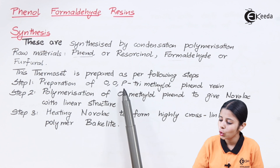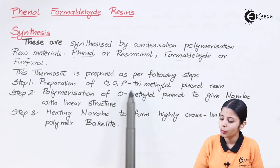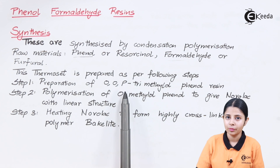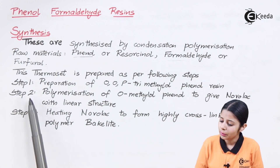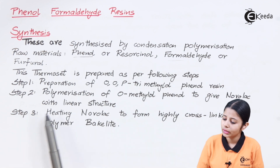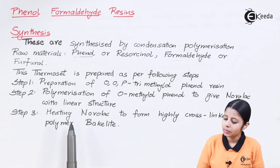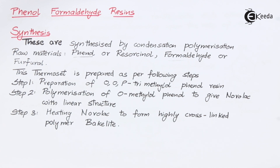The first step is the preparation of OOP trimethylol phenol. OOP stands for ortho, ortho, and para — three positions on the benzene ring. Step 2 is polymerization of O-methylol phenol to give Novolac with a linear structure. The third step is heating Novolac to form a highly cross-linked polymer, that is Bakelite. The final product, Bakelite, will be a very strong solid structure, and to get it we follow these three steps.